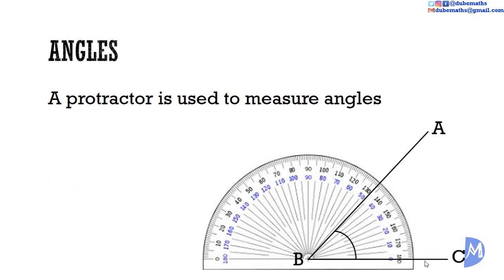Angle ABC in this instance is 0, 10, 20, 30, 40, 45, 46, 47 degrees. Angle ABC is equal to 47 degrees.